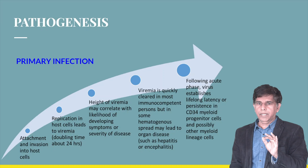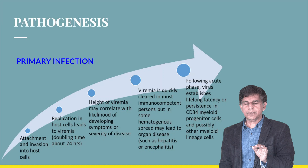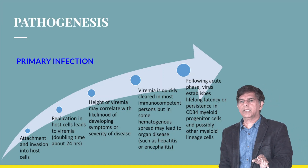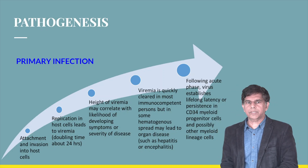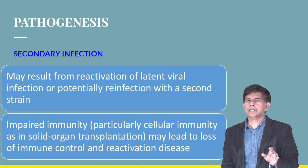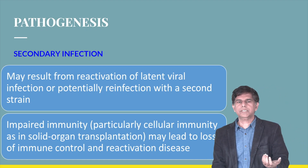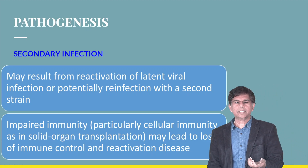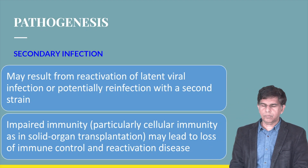Following the acute phase, the virus establishes lifelong latency in CD34+ myeloid progenitor cells and possibly other myeloid lineage cells — it hides until reactivated. Secondary infection may result from reactivation of the latent viral infection or reinfection with a second strain. Impaired immunity, particularly cellular immunity such as in solid organ transplant recipients, can lead to loss of immune control and reactivation.